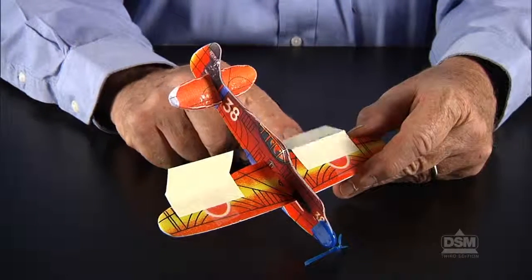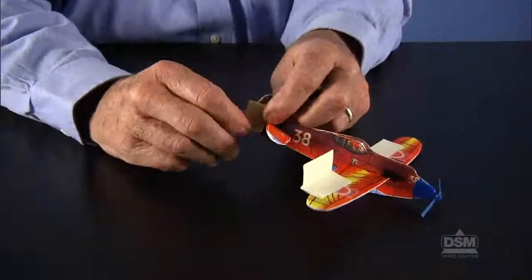Inform students that real pilots use all of the plane's control surfaces together in order to control its flight path. For the next trial, students should leave the ailerons in place with the right aileron tilted up and the left aileron tilted down and reattach the rudder.